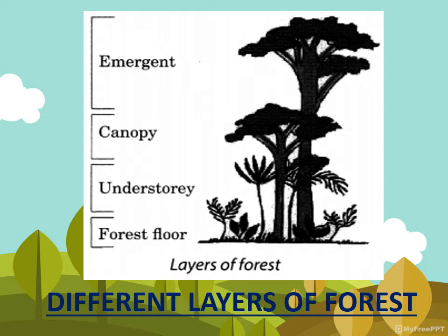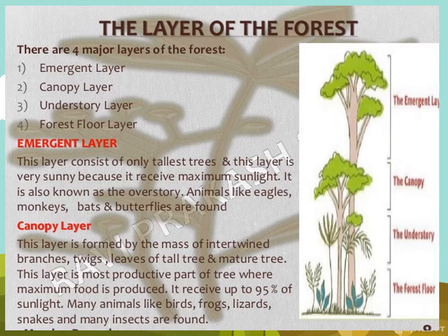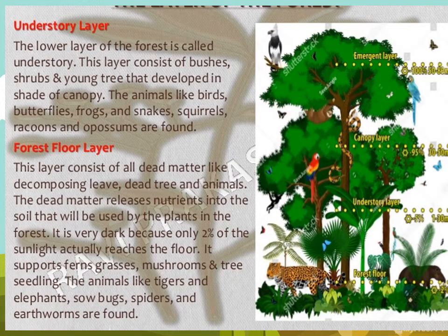The canopy layer consists of tree crowns and is always exposed to sunlight. The emergent layer consists of the topmost layer of trees and is generally found in tropical areas. These are the four major layers of the forest: emergent layer, canopy layer, understory layer, and the forest floor layer. The forest floor consists of all dead matter like decomposing leaves, dead trees, and animals.